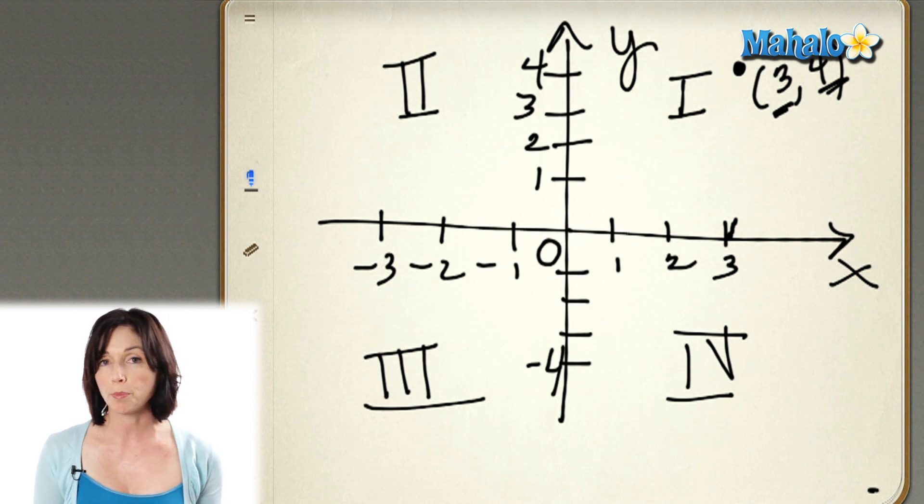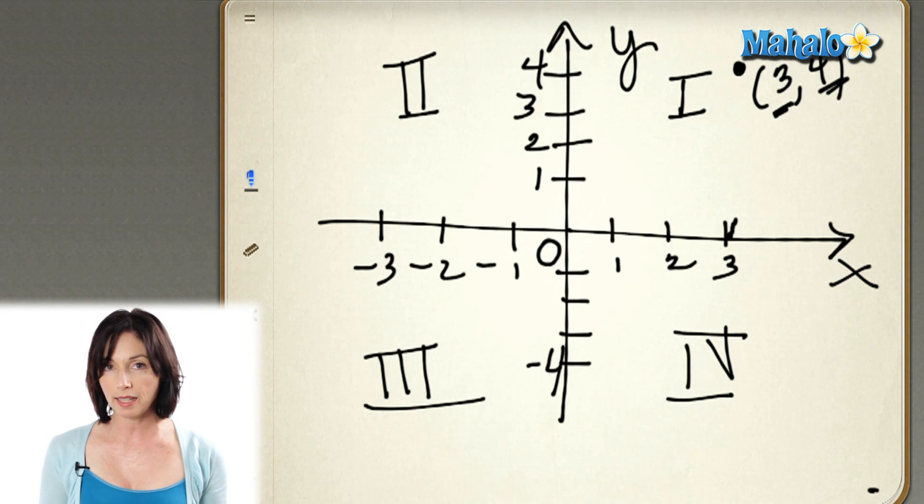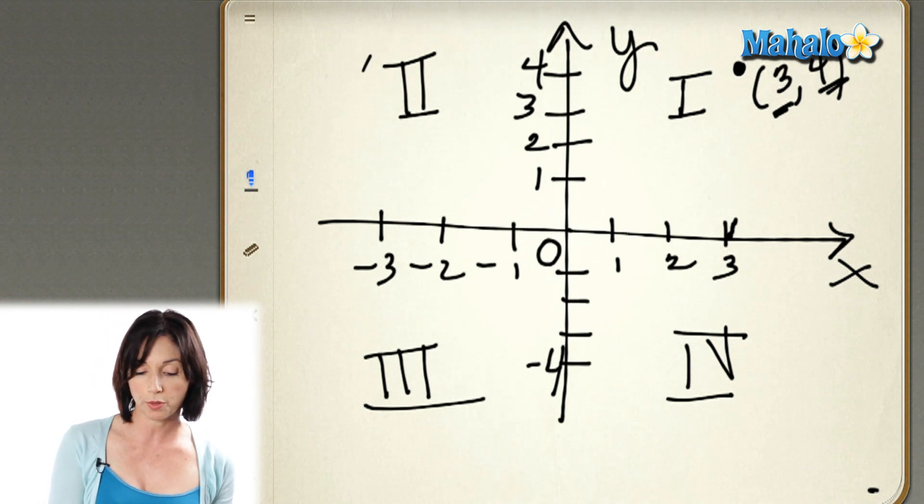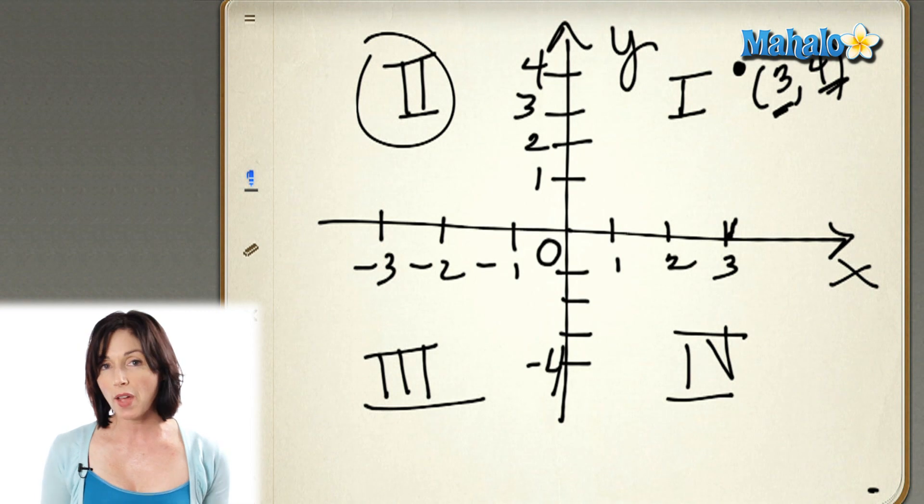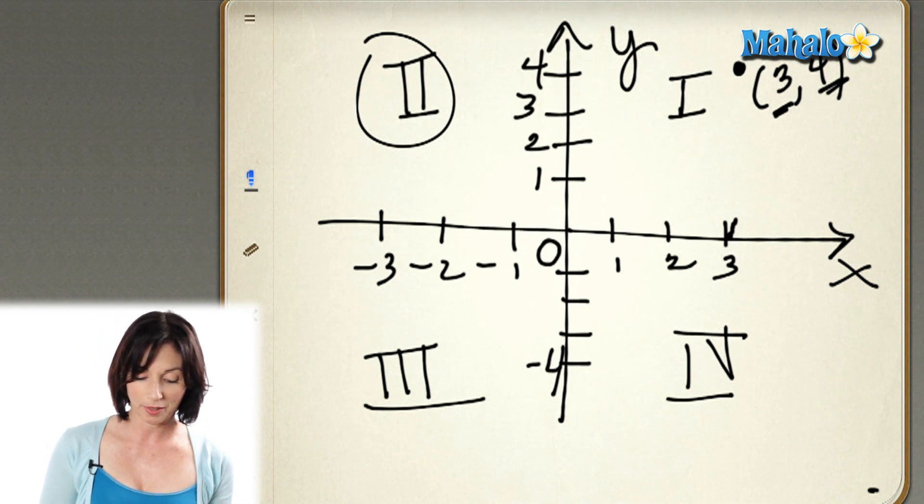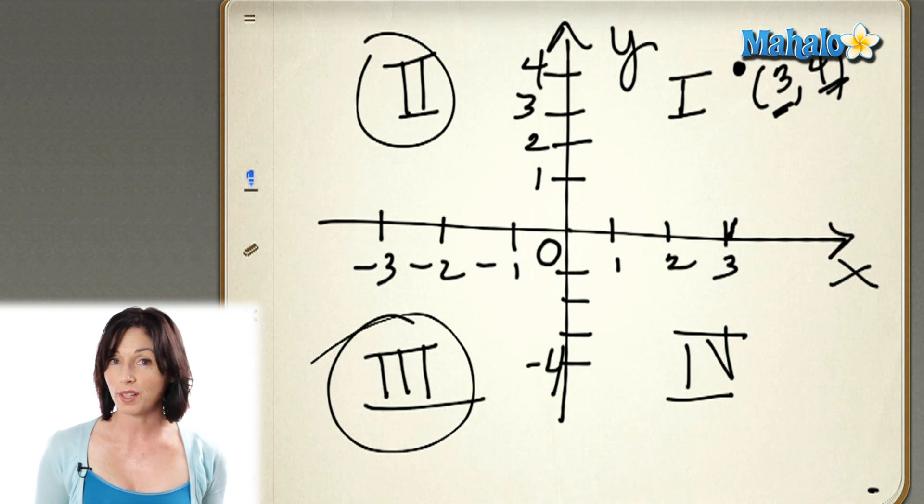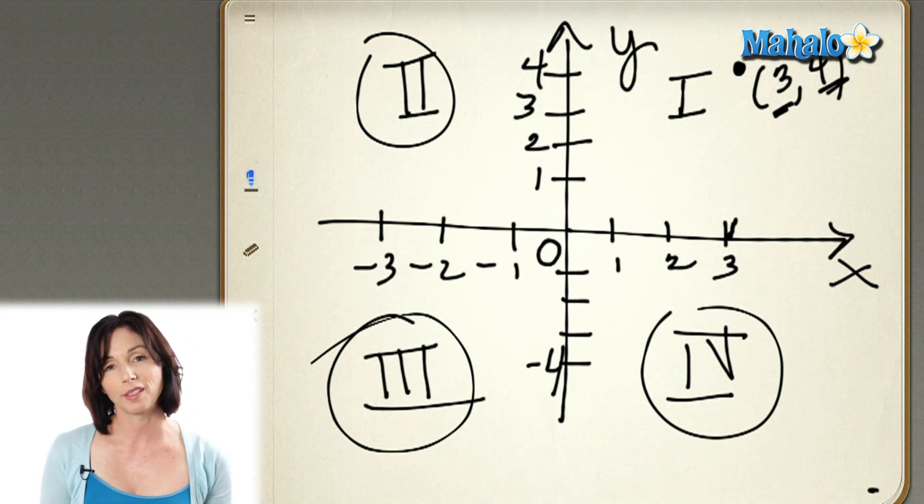Now, if both the x and y values are positive, they'll be in quadrant 1. If the x value is negative and the y value is positive, it'll be over here in quadrant 2. If both values are negative, that'll be down here in quadrant 3. And if the x value is positive, but the y value is negative, you'll find them down here in quadrant 4.